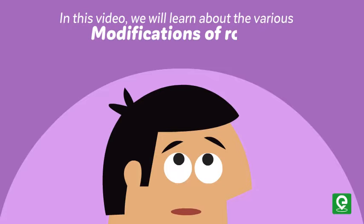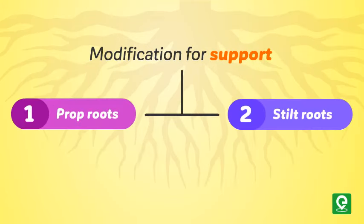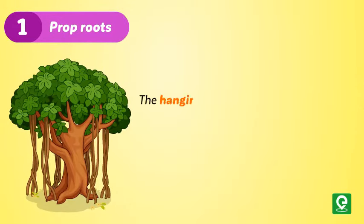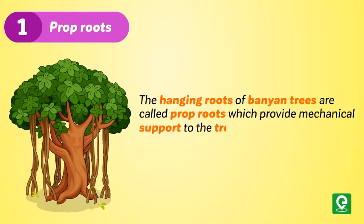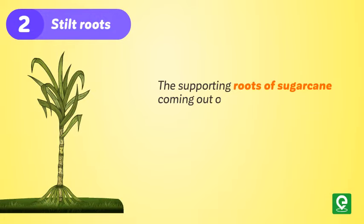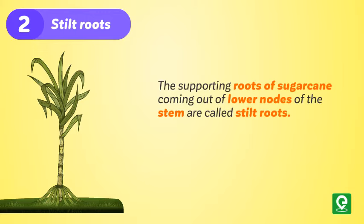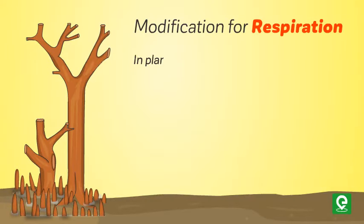In this video we will learn about the various modifications of the root. Modifications for support: roots are modified into two different forms to give extra support to the plant. Number one — prop roots: the hanging roots of banyan trees are called prop roots, which provide mechanical support to the tree. Example: Ficus bengalensis. Number two — stilt roots: the supporting roots of sugarcane coming out of lower nodes of the stem are called stilt roots. Example: Saccharum officinarum.